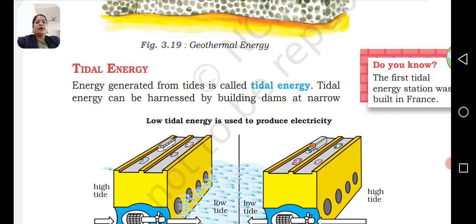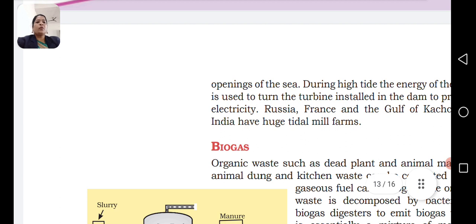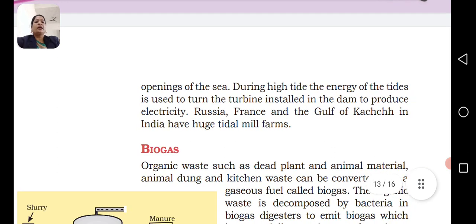Tidal energy can be harnessed by building dams at narrow openings of the sea. The tidal flow is used to turn turbines installed in the dam to produce electricity. Russia, France, and the Gulf of Kachchh in India have tidal mill farms.